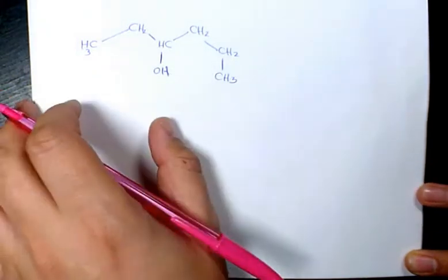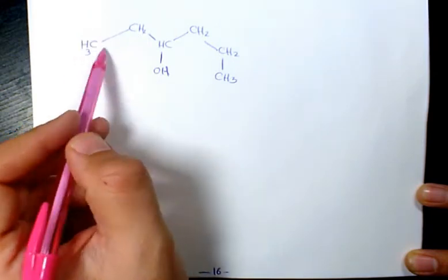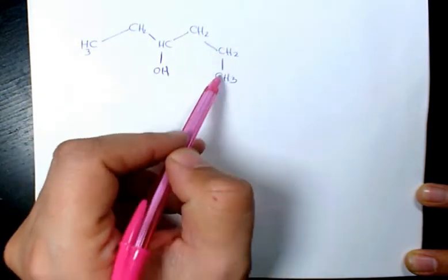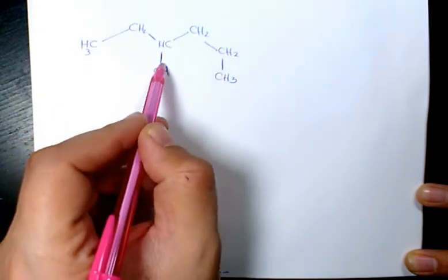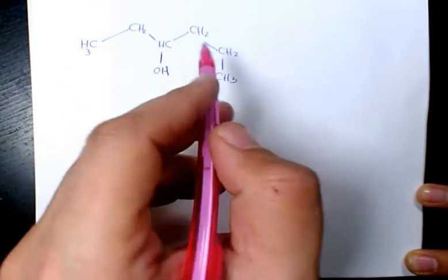name this organic compound. As you see here, we have one, two, three, four, five, six carbon atoms and methyl groups, and you have a hydroxyl group in here. So it means that we are dealing with an alcohol.